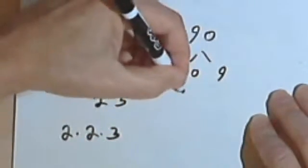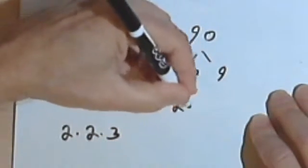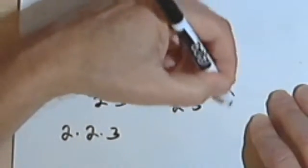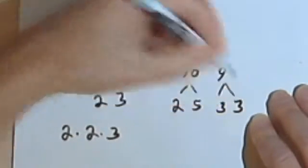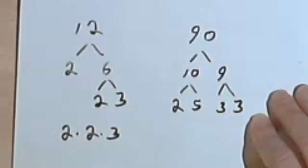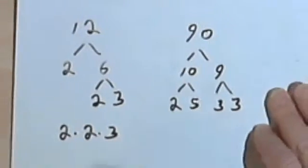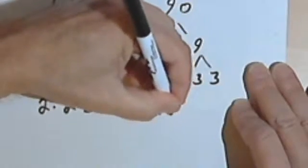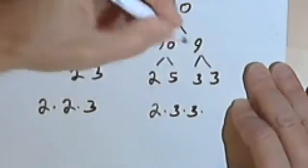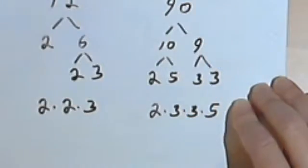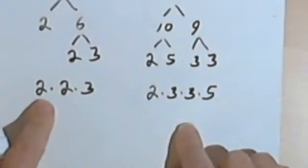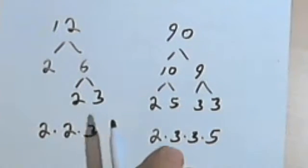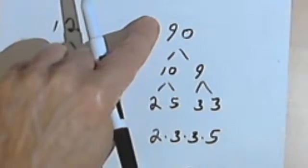So 10 is 2 times 5. So I've got a 2 and a 5. And 9 I can break down into 3 times 3. So I'll write these numbers in numerical order. So I've got a 2 times 3 times 3 times 5. So 2 times 2 times 3 is the same as 12, and 2 times 3 times 3 times 5 is the same as 90.